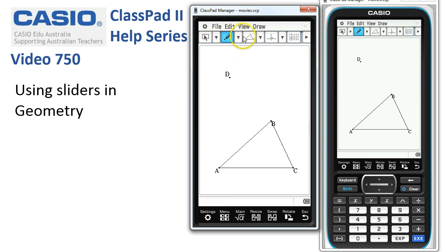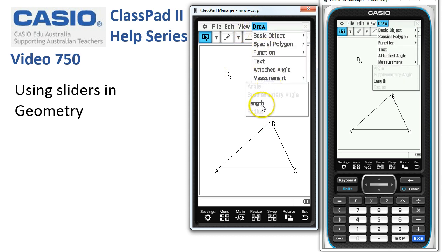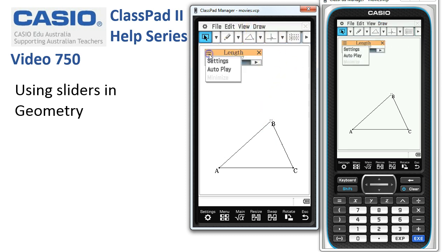And if I get the select tool and choose point D and choose point B, then I can use a slider to adjust this distance. Draw slider length, and again if I just go straight to autoplay, you'll see how this can animate the point and here it goes.